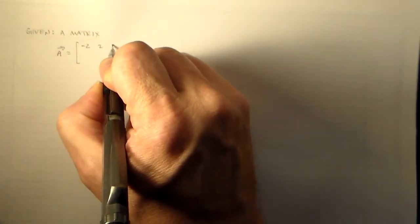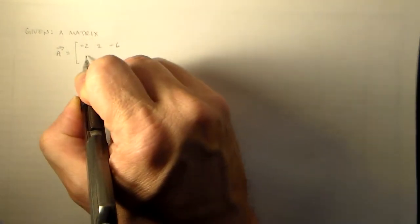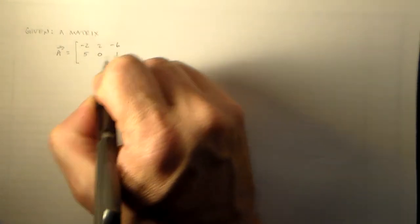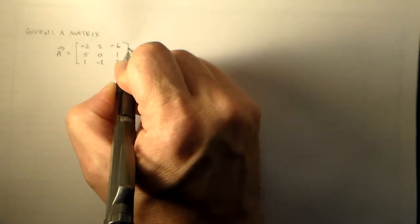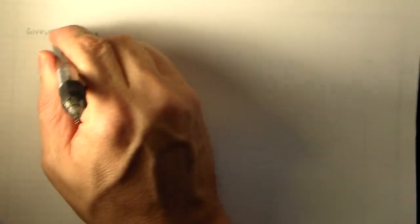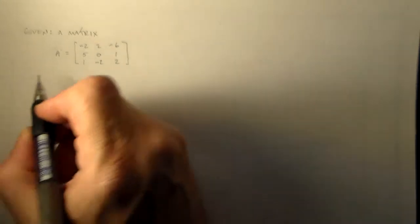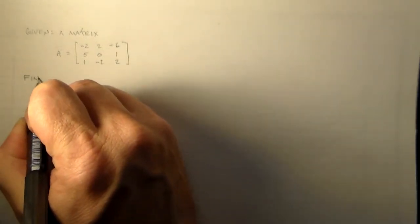So we start with some matrix A, right, and that's equal to nine numbers: minus two, two, minus six, five, zero, one, one, minus two, two. Okay, it's a matrix, so either we give it the double arrow or no arrow at all.